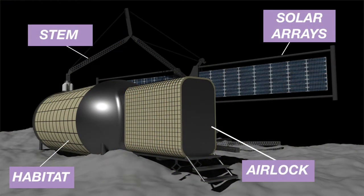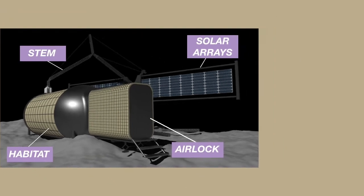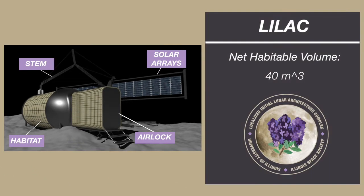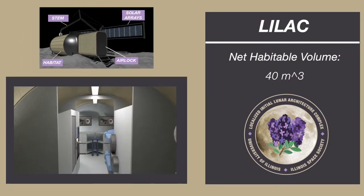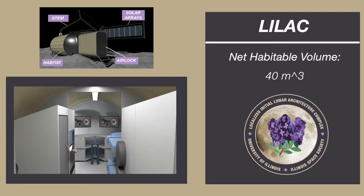LILAC consists of a deployable habitat and the surface transportation and engagement mechanism, or STEM. The habitat has a net habitable volume of 40 cubic meters and features an airlock, a suit donning and doffing zone for dust containment, and a main habitation area.